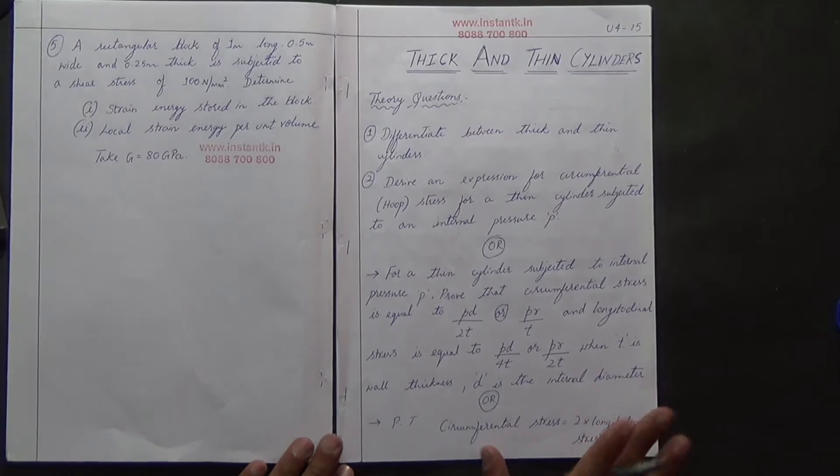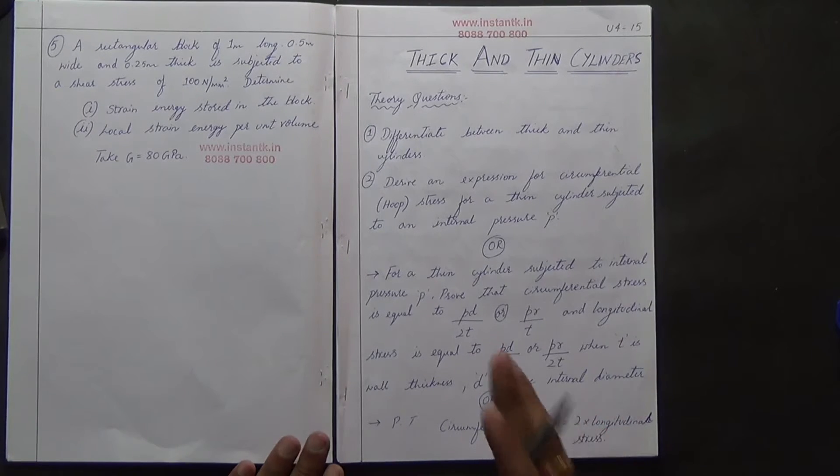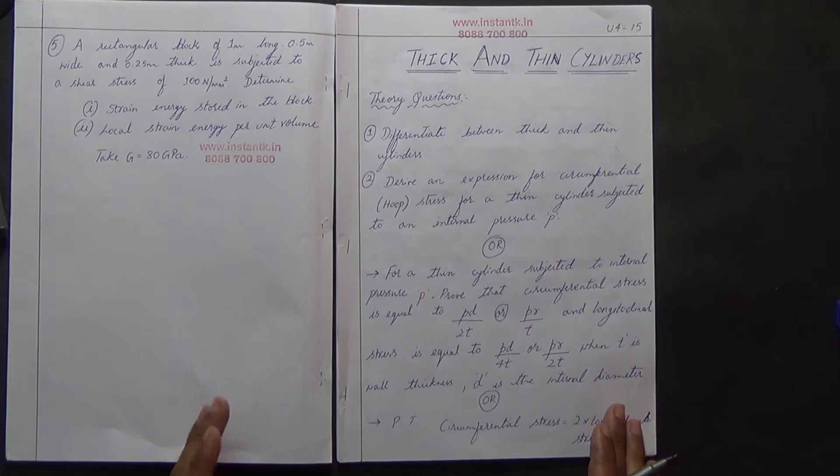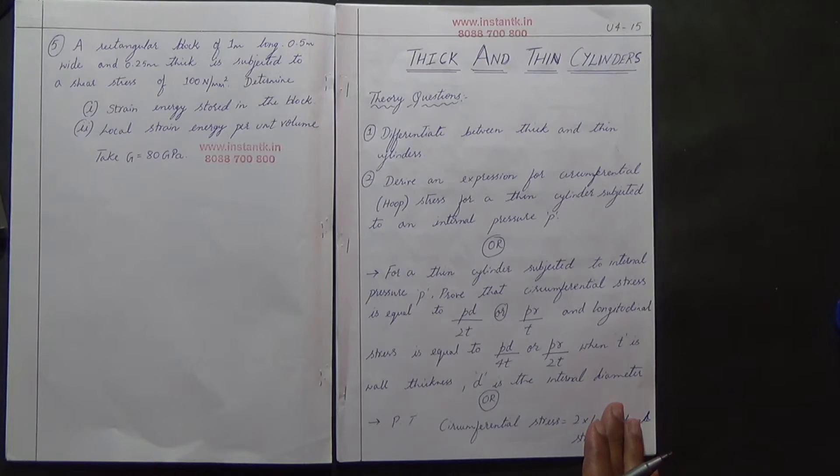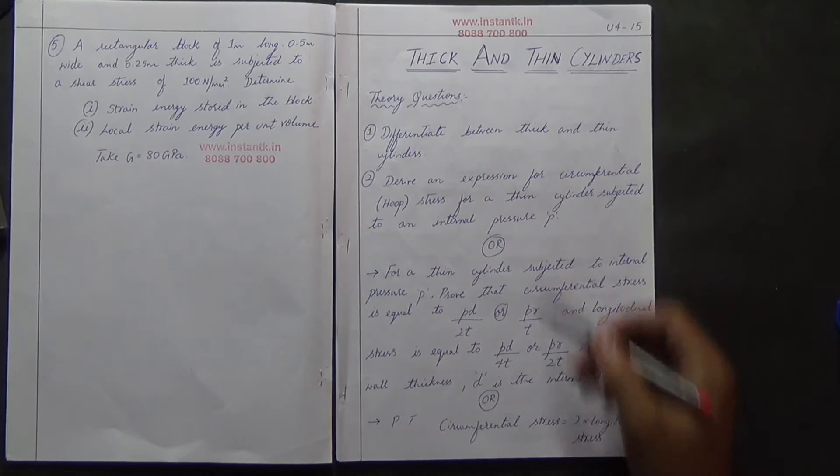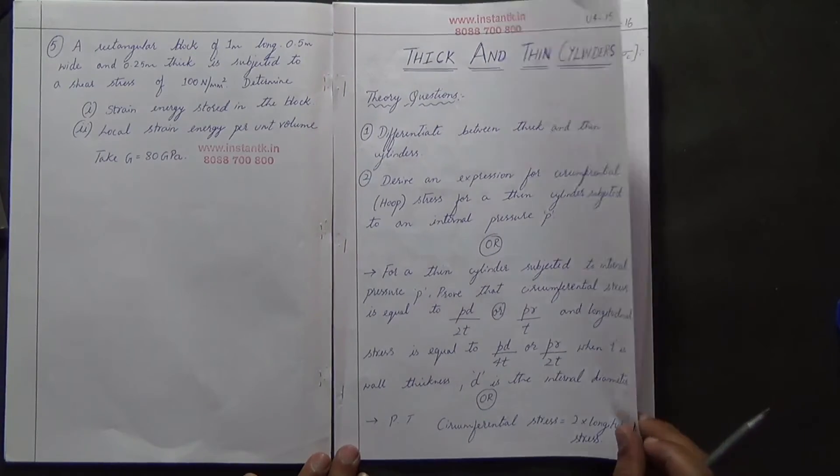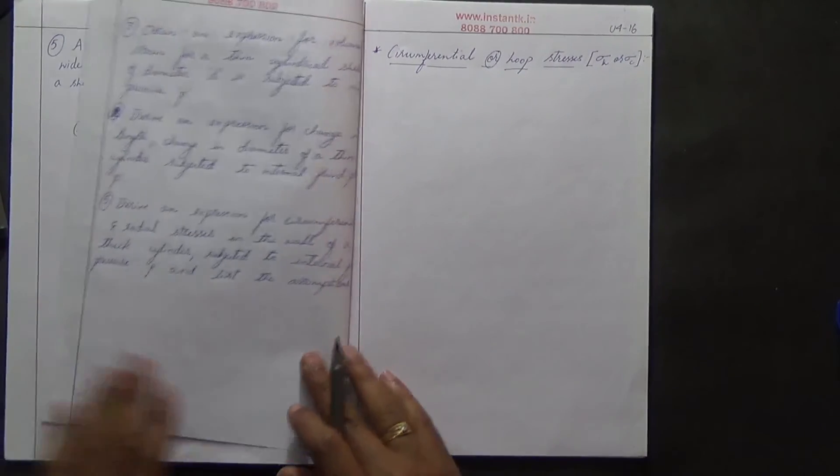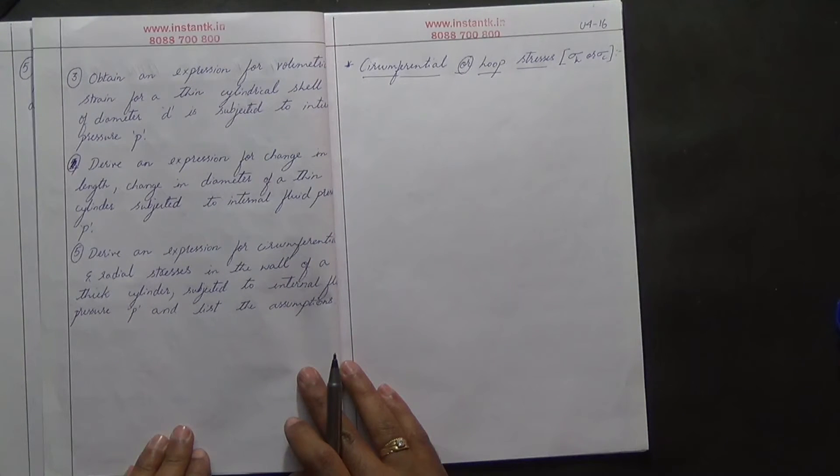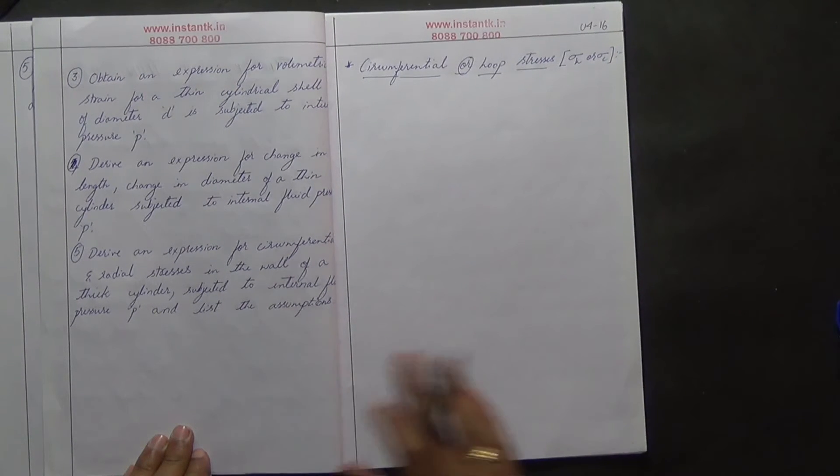Next is thick and thin cylinders. Very important theory questions include: differentiate between thick and thin cylinders, derive an expression for circumferential stress for a thin cylinder subjected to internal pressure, prove that circumferential stress equals two times longitudinal stress, and obtain the expression for volumetric strain for a thin cylindrical shell of diameter D subjected to internal pressure P.